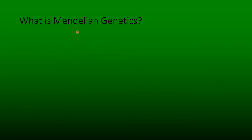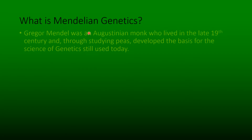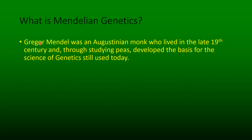What is Mendelian Genetics? Gregor Mendel was an Augustinian monk who lived in the late 19th century, and through studying peas, developed the basis for the science of genetics still used today.